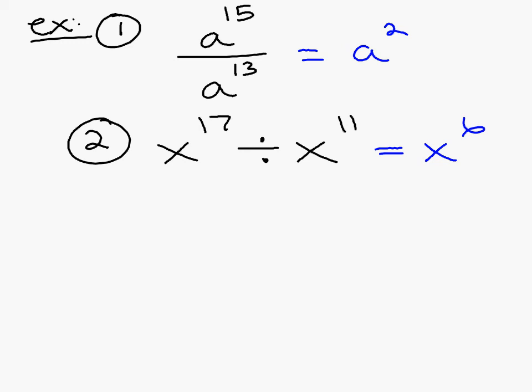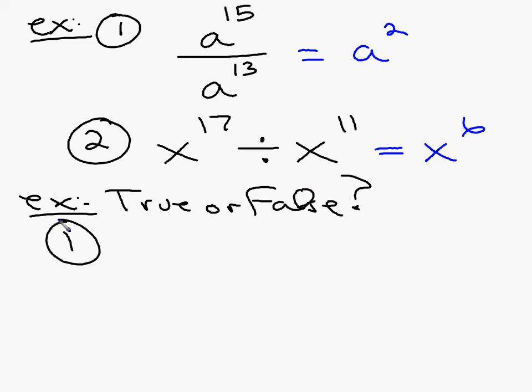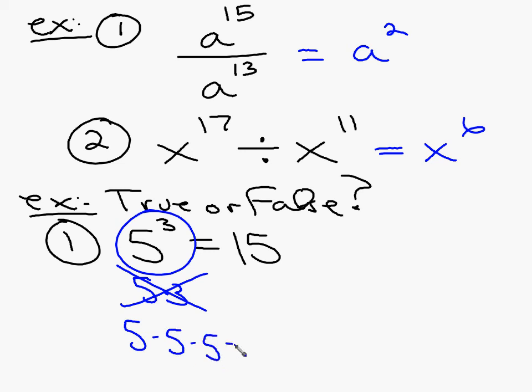Now, the last thing that you're going to have to do tonight is they're going to ask you if a statement is true or false. And they're going to give you a statement, and they want you to tell whether it's true or not. How about five to the third equals 15? Is that a true statement or a false statement? It's false. Because five to the third does not mean five times three. That's wrong. It means five times five times five, which is 125. This one is false.